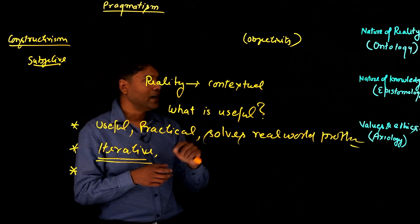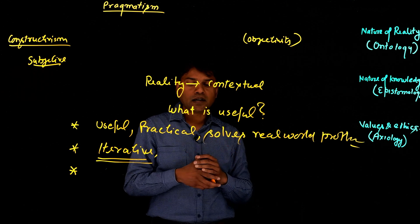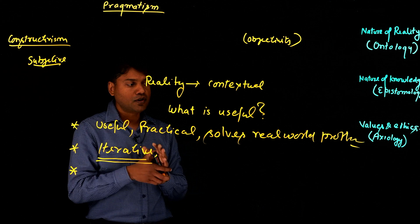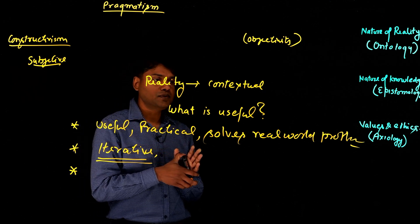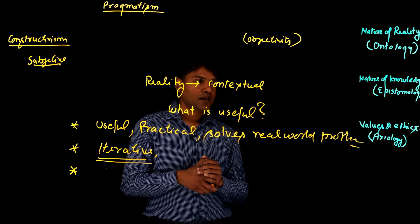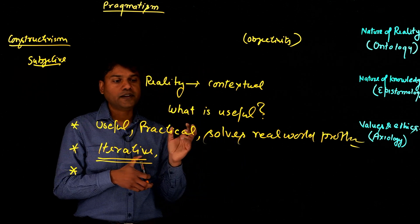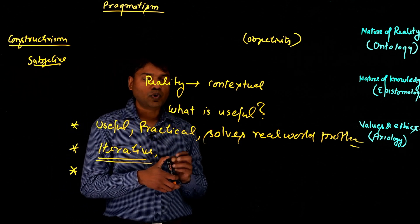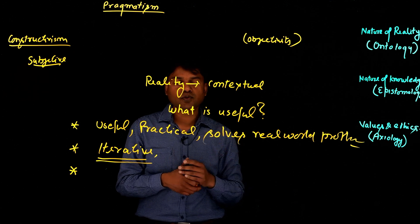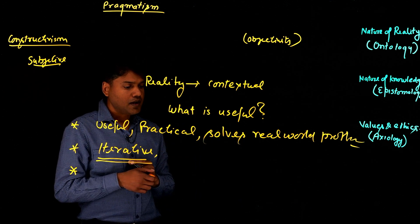Coming to the third point of values and ethics, pragmatists are again, as I said, more focused on finding the solutions and what works best in a particular situation. So there are ethics and values. It's not a fixed thing. It's again driven by what is useful and what can bring more change to solve the real world problems.